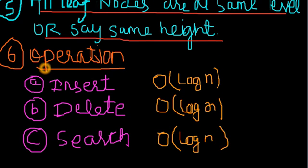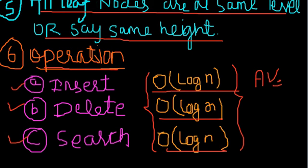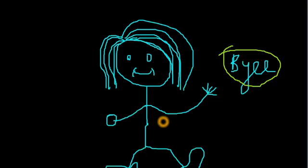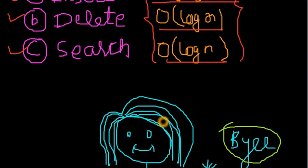Now we see three operations: insert, delete, and search. All follow O(log n) - this is average case. All these can be done in order of log n. For further videos, there is insertion and deletion in the same topic, B-trees. Thank you.